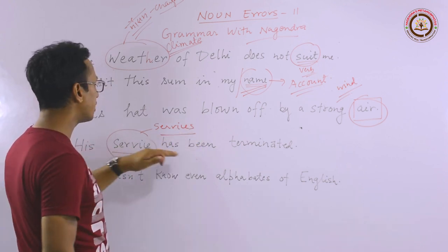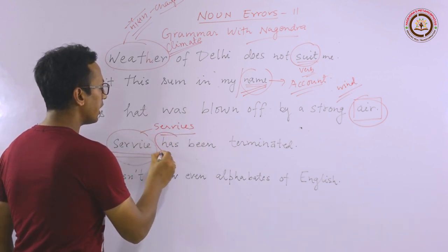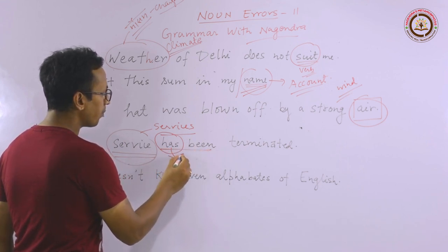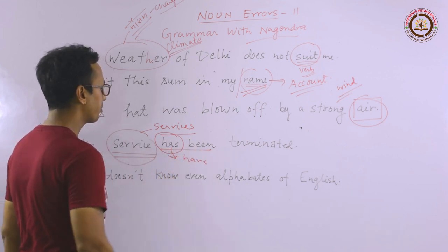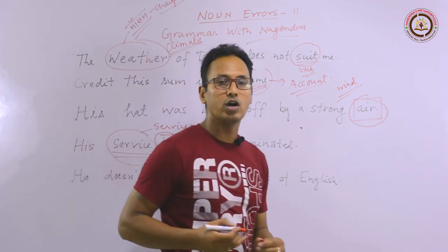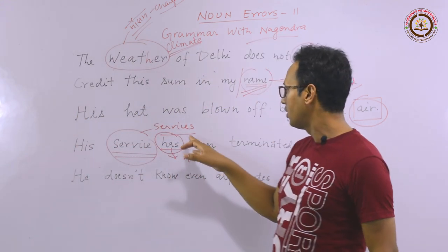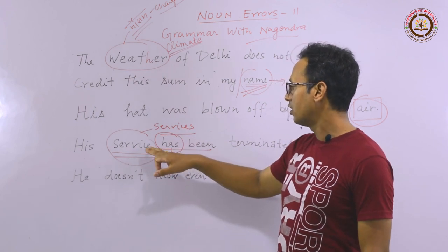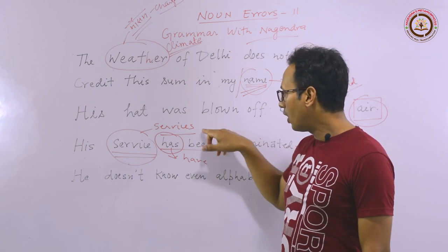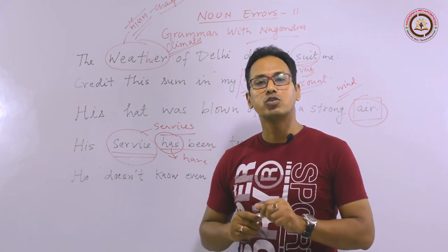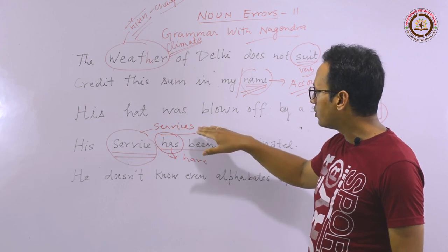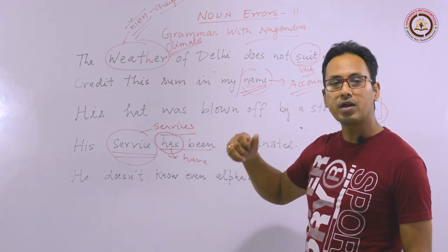We say 'his services,' and the helping verb 'has been' also needs to change to plural. It will become 'His services have been terminated' — that is correct. The error is in 'service.' Now the question arises: what is the difference between 'service' and 'services'? Services refers to formal employment — jobs where your HRA, TA, DA, and salary are fixed and increments happen properly.